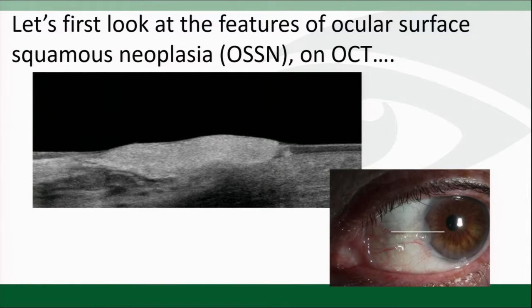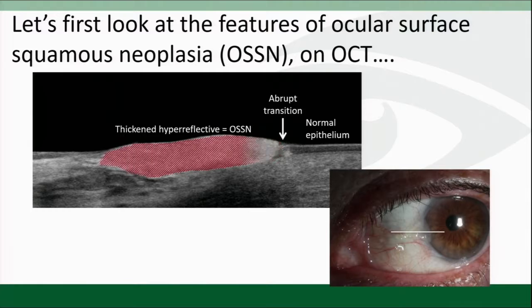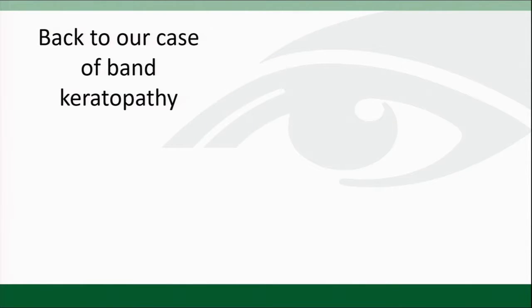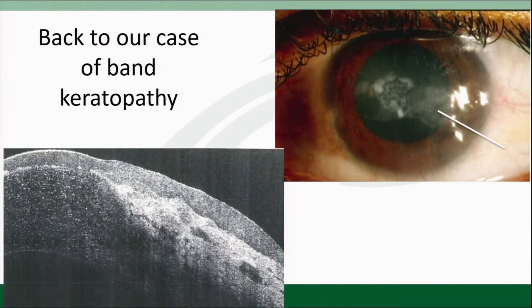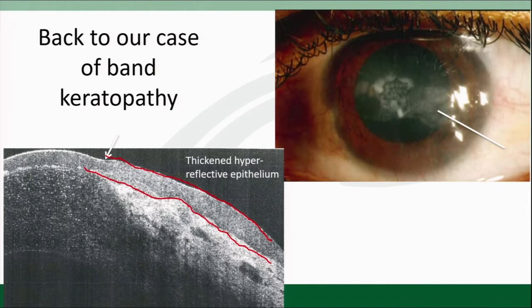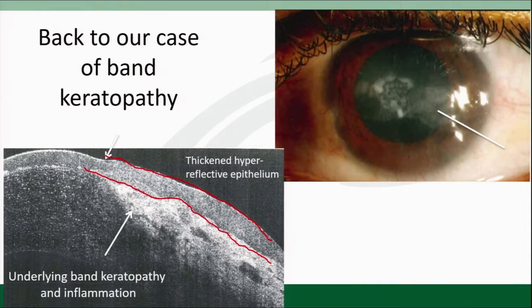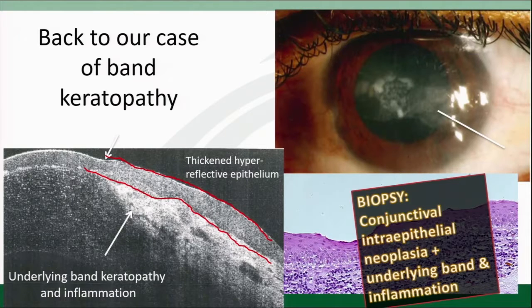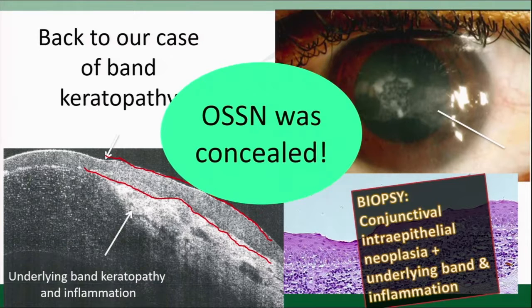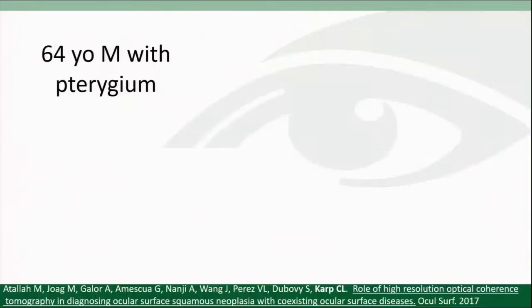Let's look at the classic features of ocular surface squamous neoplasia, or OSSN. We see normal epithelium with an abrupt transition to thickened hyperreflective epithelium. Going back to our young man with band keratopathy, on OCT we see an abrupt transition with thickened hyperreflective epithelium, and the white material represents the band keratopathy. This was biopsied and showed intraepithelial neoplasia and band keratopathy — OSSN was concealed on this surface.